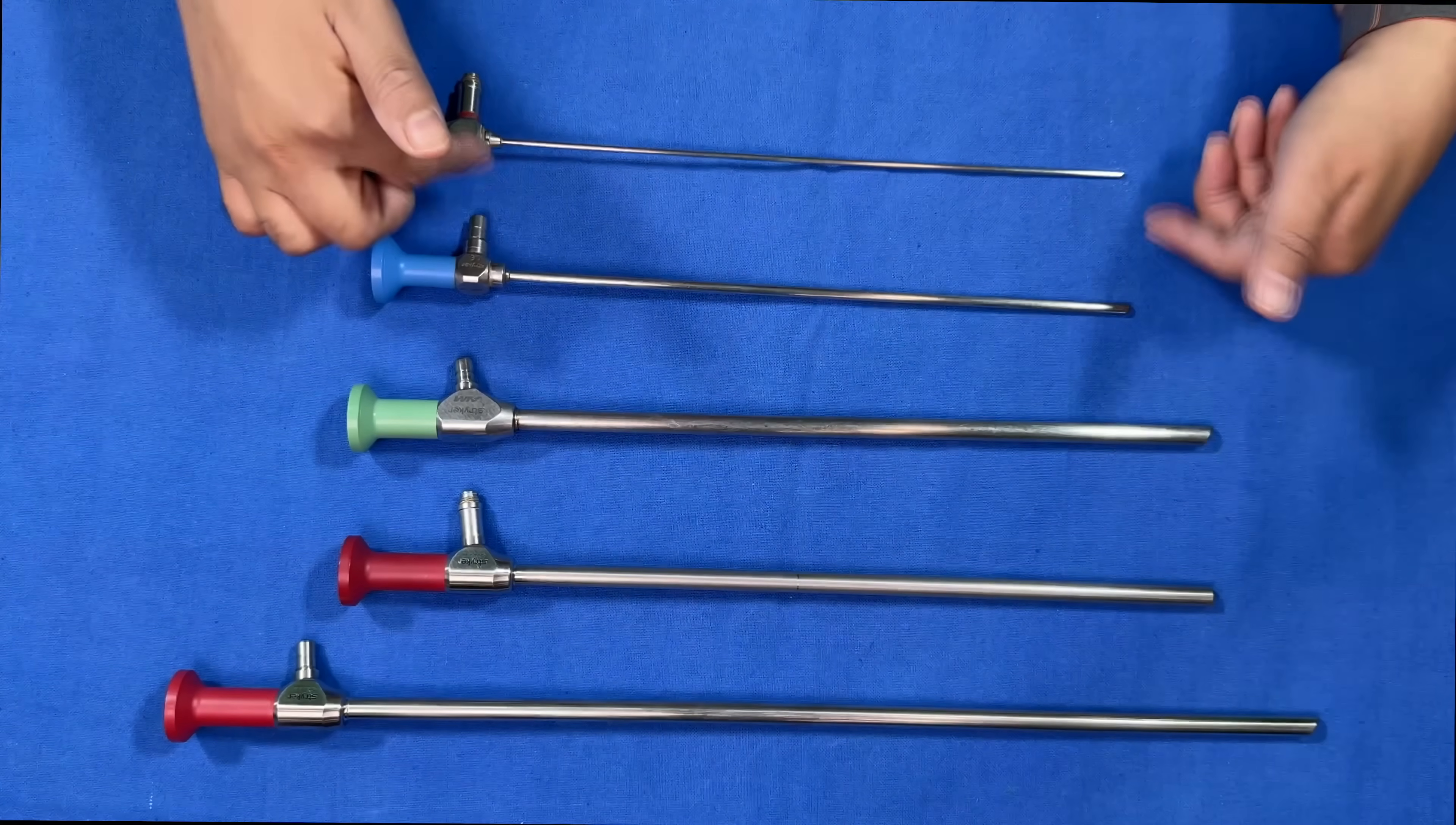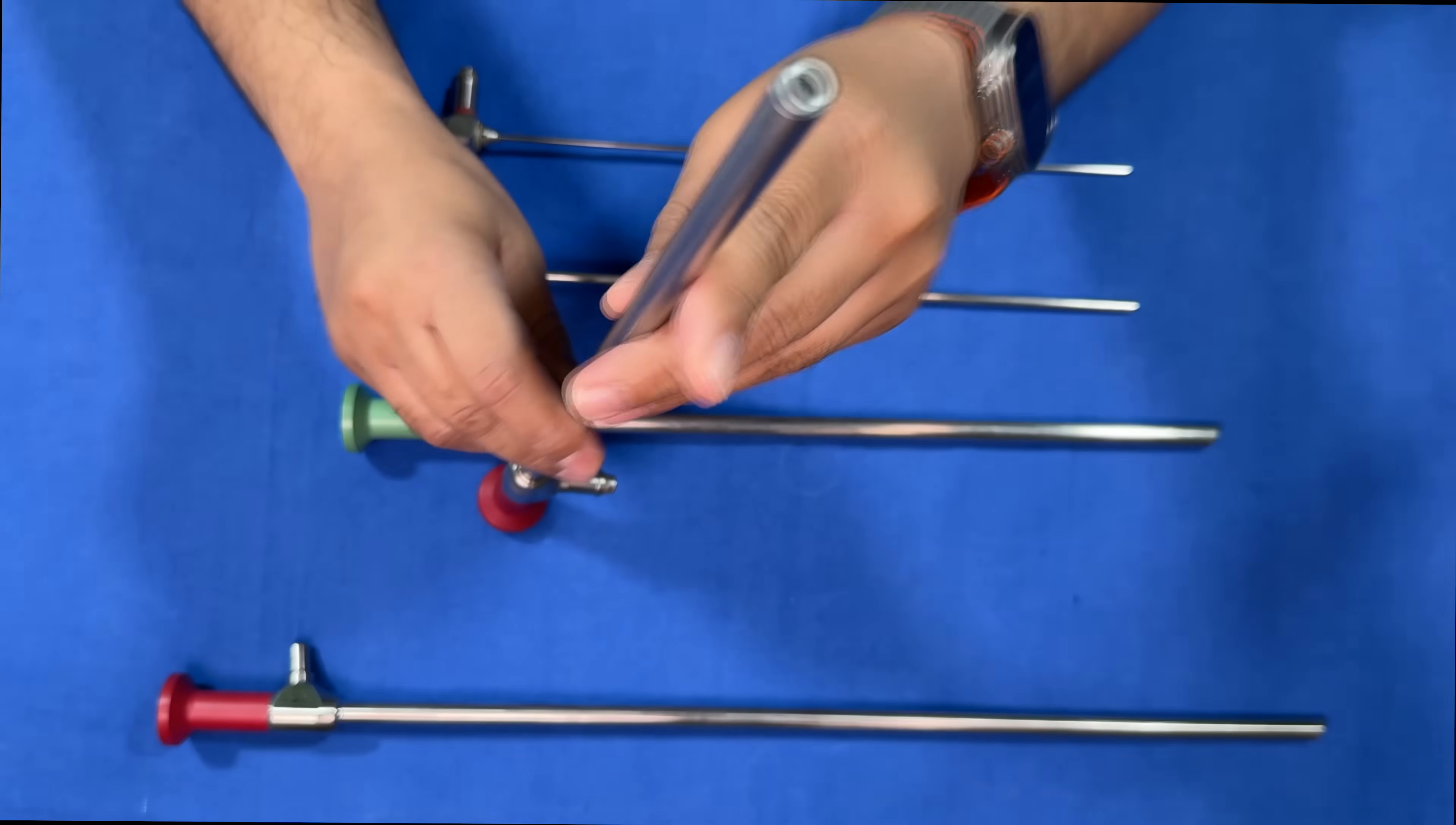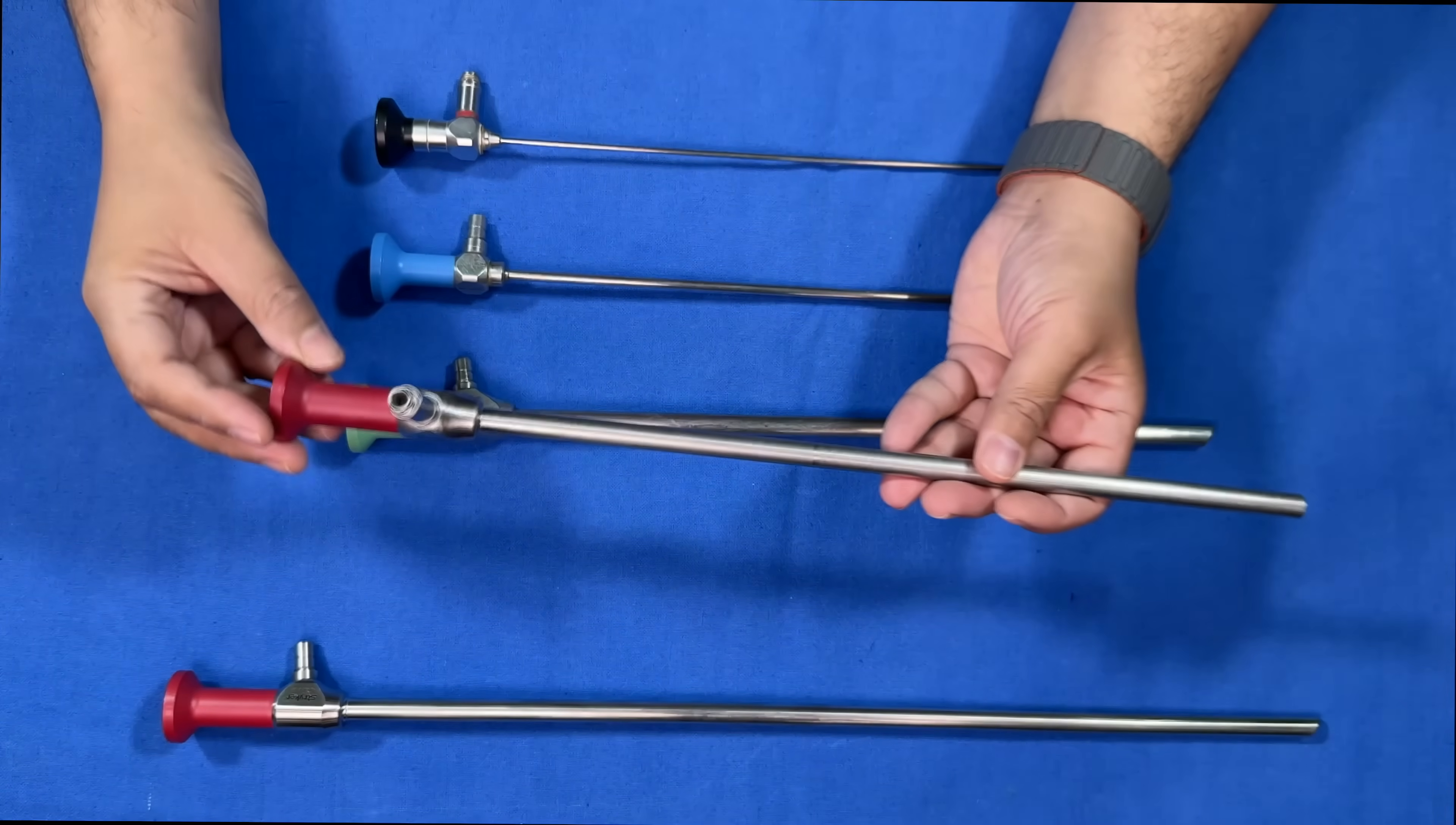This one has 34 centimeters, again 34, and these two scopes have a length of 30 centimeters. Depending upon the angle of the tip, some scopes have a flat angle like this one. It does not have an angle at the tip, so this is called a zero degree.